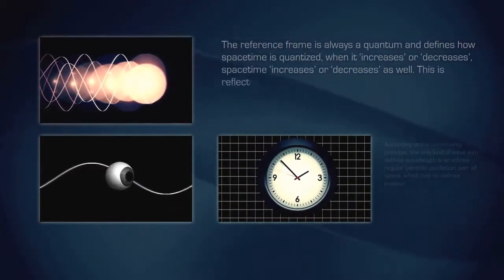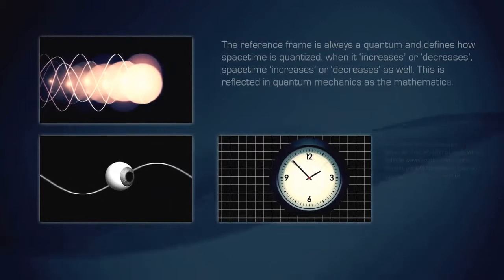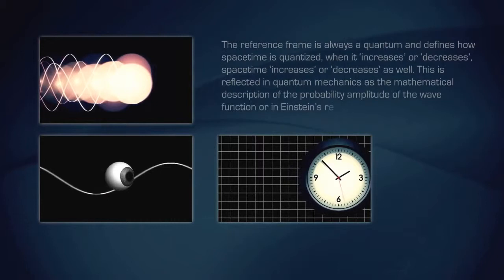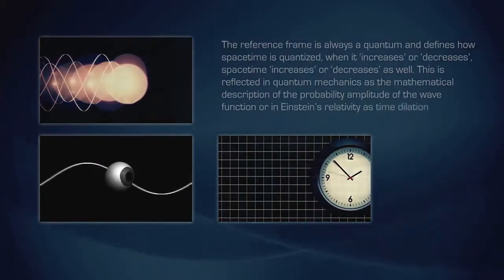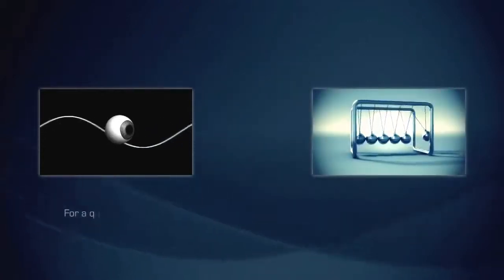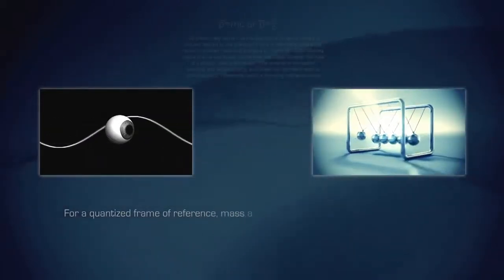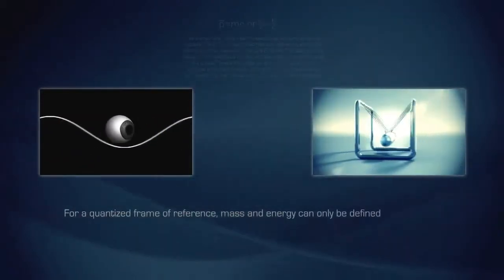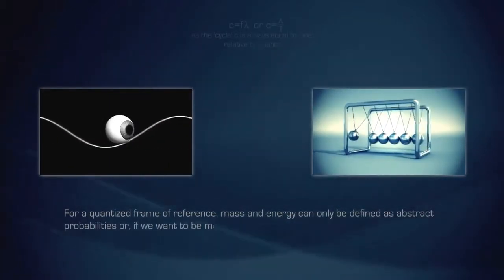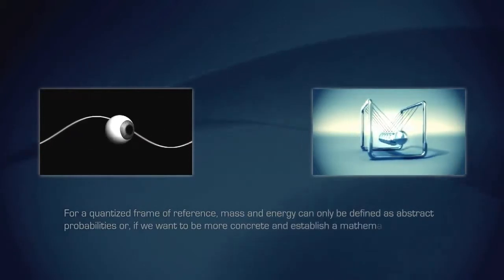This is reflected in quantum mechanics as the mathematical description of the probability amplitude of the wave function, or in Einstein's relativity as time dilation and length contraction. For a quantized frame of reference, mass and energy can only be defined as abstract probabilities,